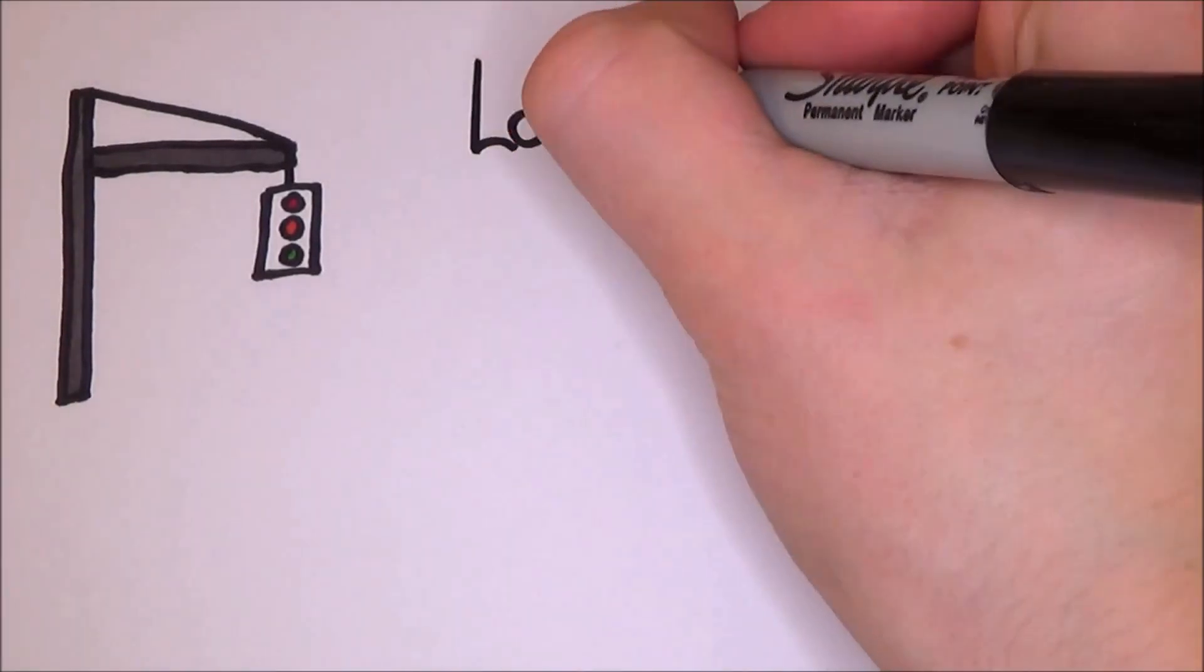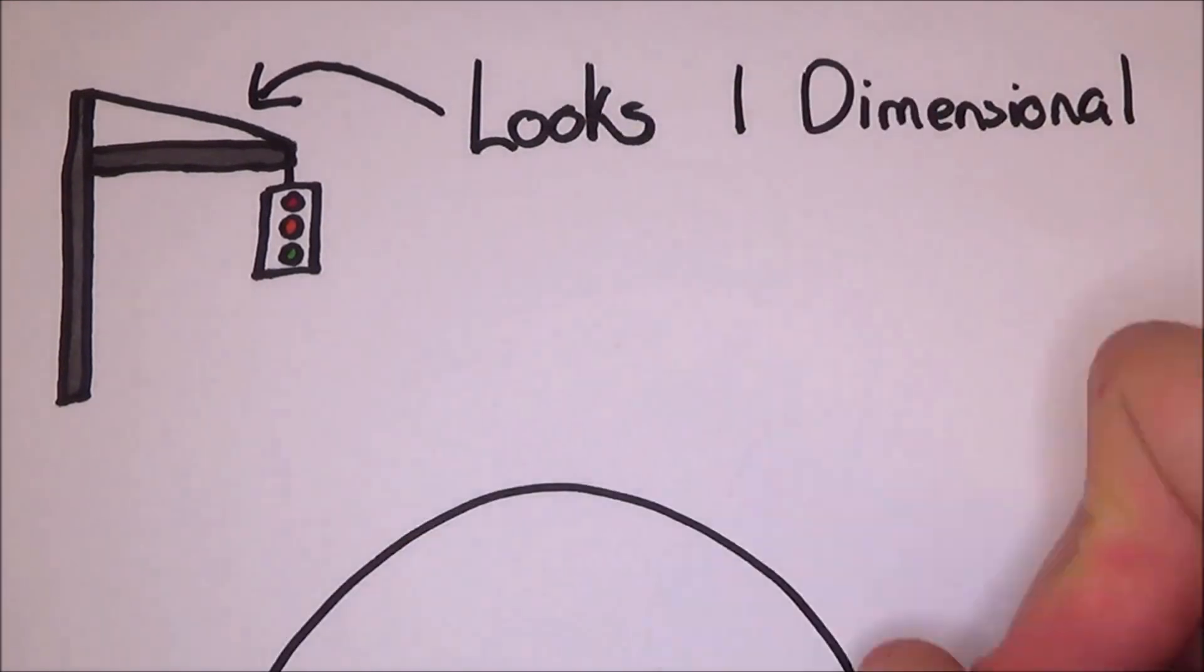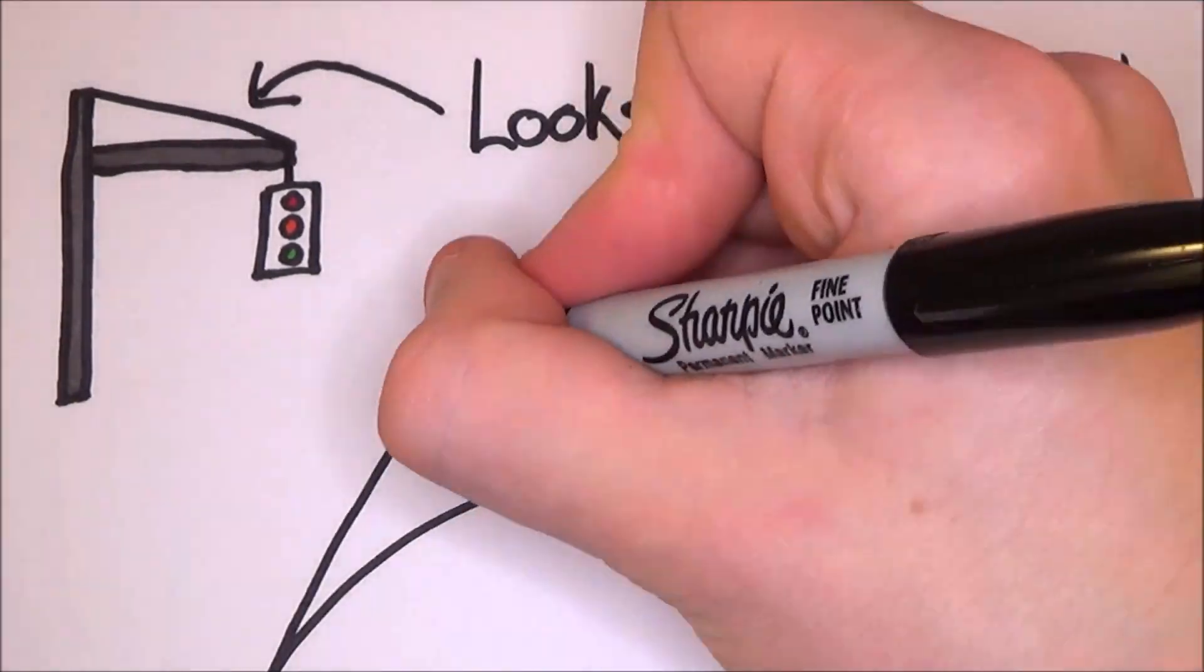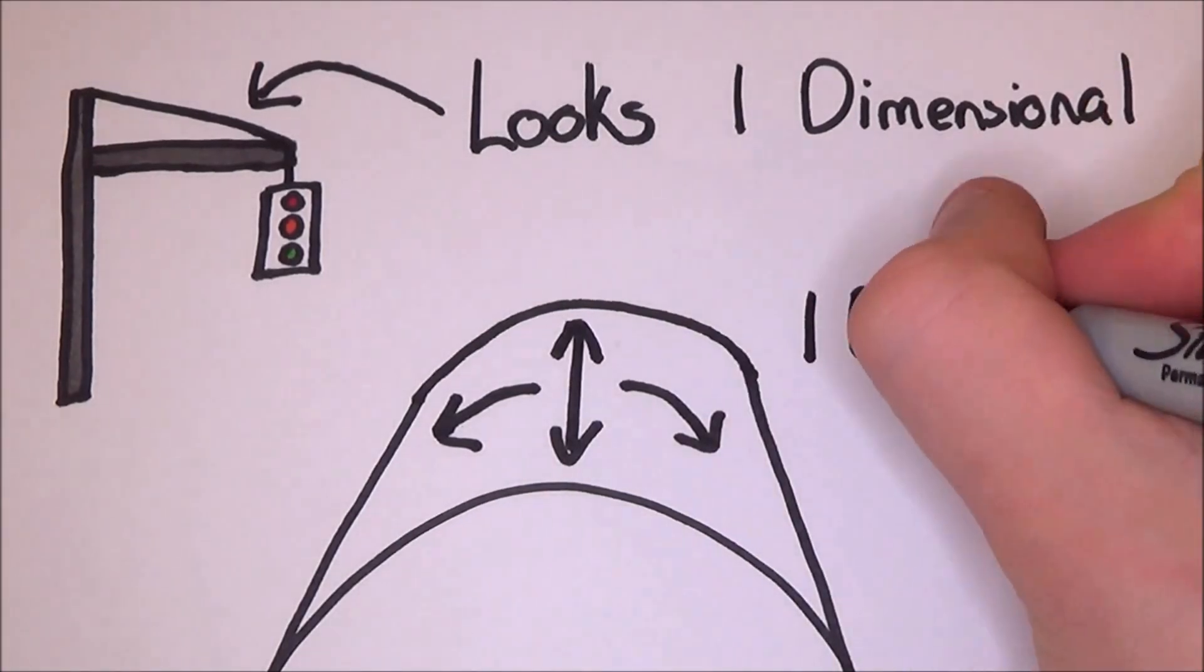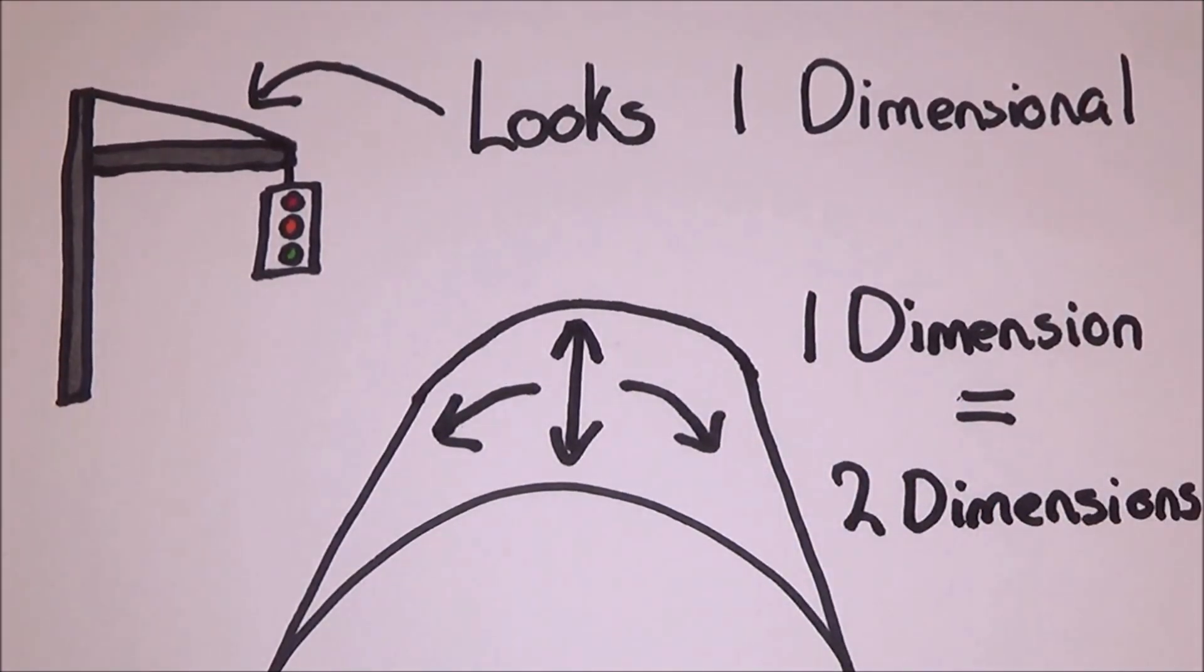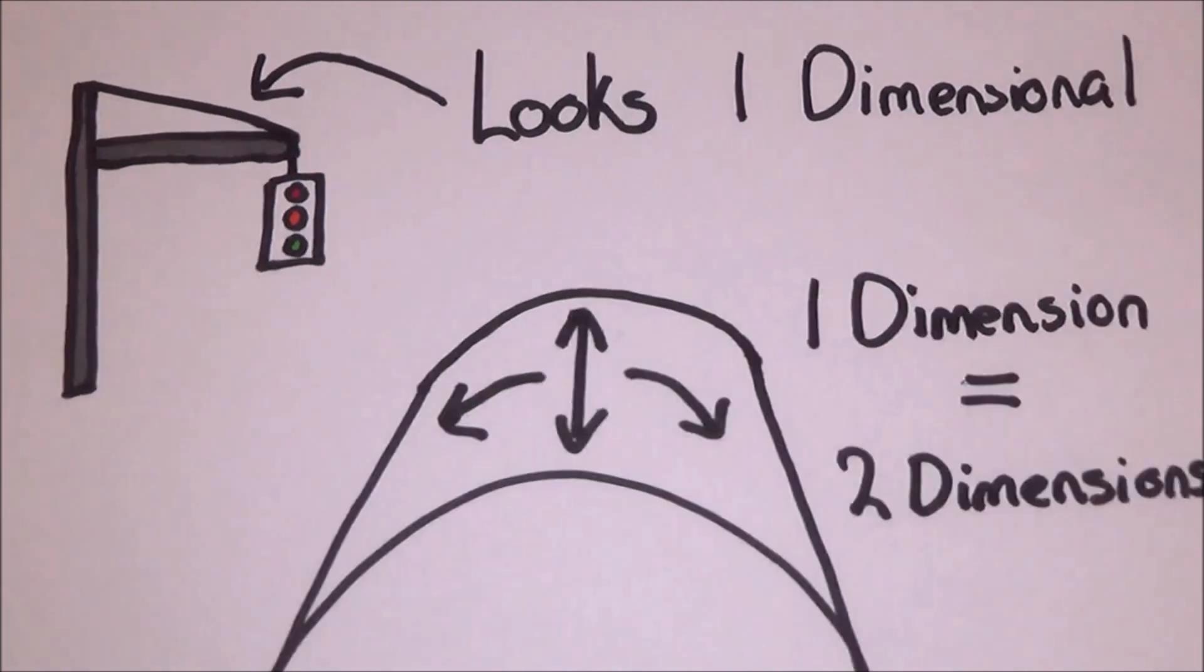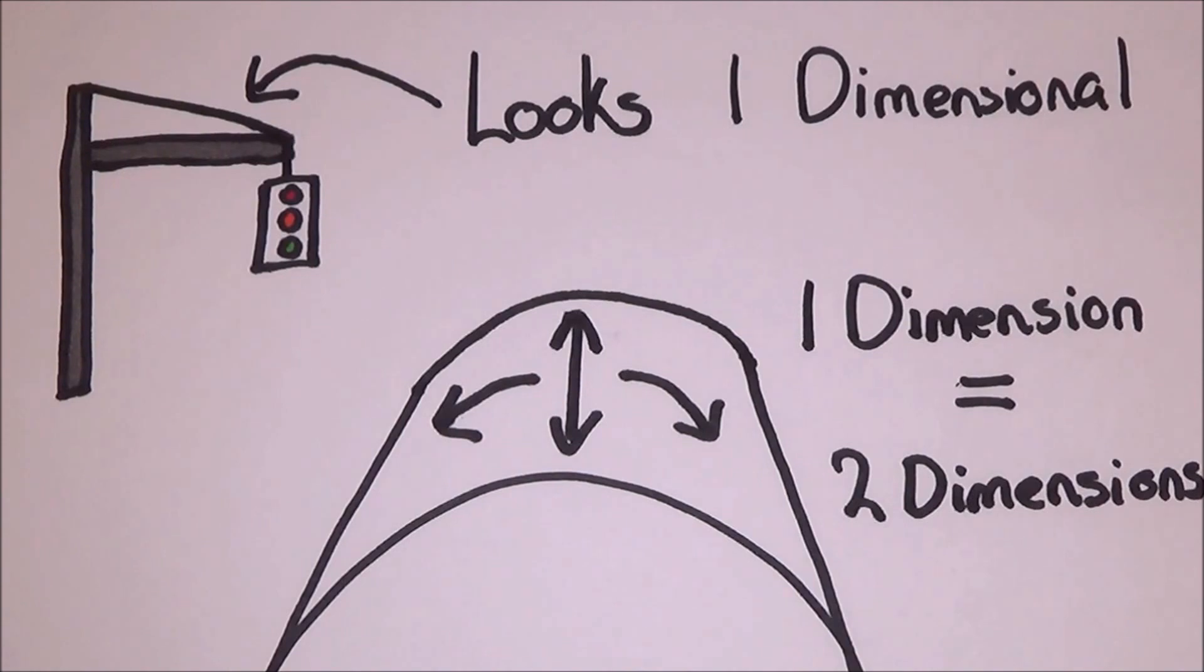What they suggested was, if you imagine a traffic line held up by a cable, from here, it looks like it's a one dimensional line. If you went to, say, an ant's perspective of the cable, suddenly there is thickness to it, and you can now move up and down clockwise and anti-clockwise around the cable. This is what they suggest. Now what may seem like a single dimension from afar is actually two dimensions close up.